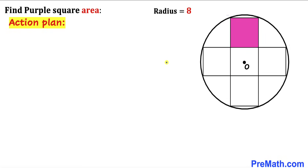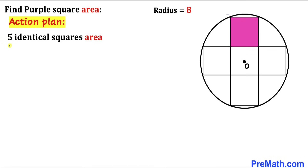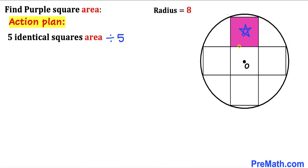Let's go ahead and get started. Here's our action plan: since we are interested in calculating the area of this purple shaded square, and moreover we know that all five squares are identical, we are going to calculate the area of all five identical squares first, and then divide that area by 5 to get the area of this purple shaded square.